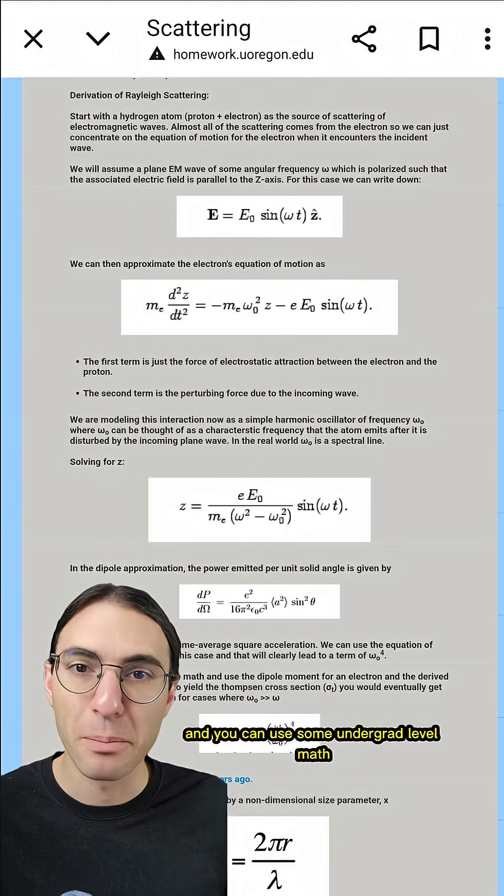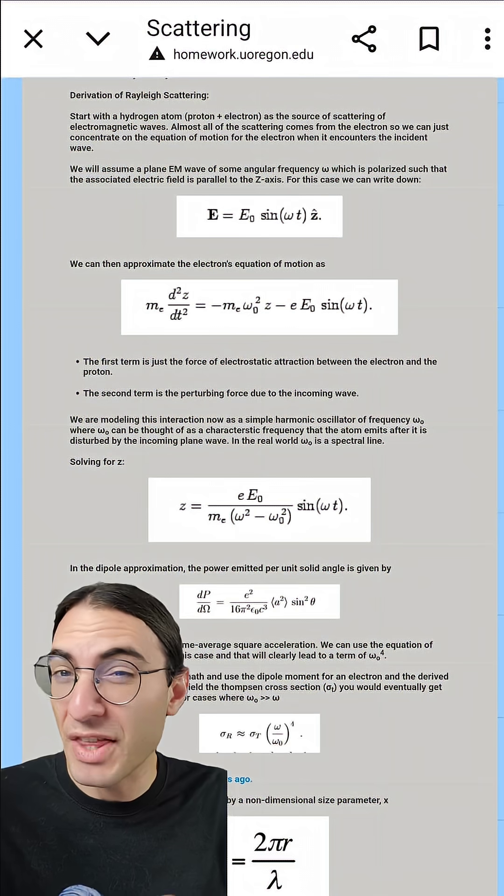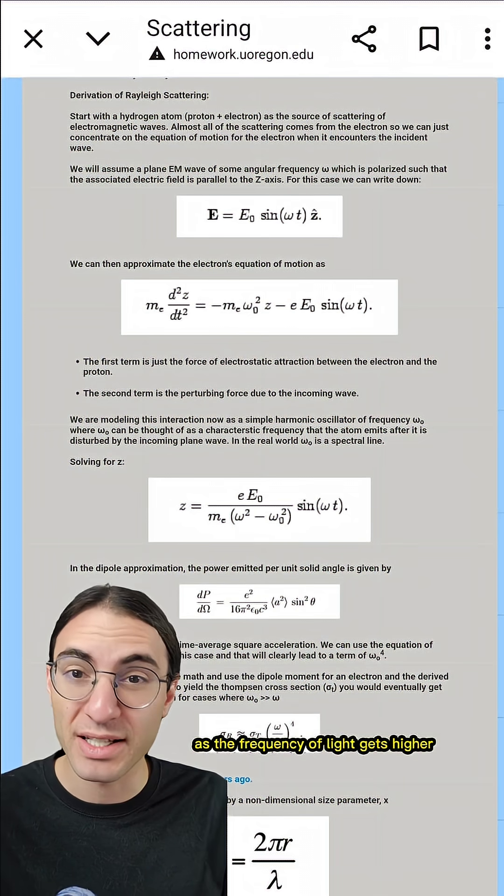You can use some undergrad-level math to prove that when the scattering occurs off of particles that are smaller than the wavelength of light, the amount of light scattered gets bigger as the frequency of light gets higher.